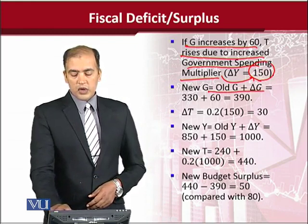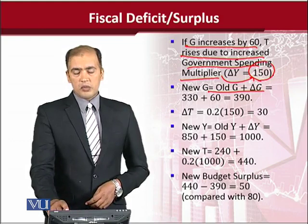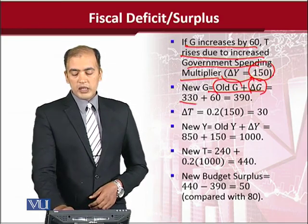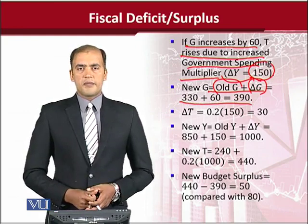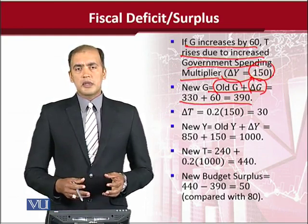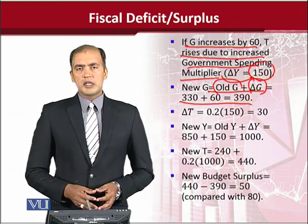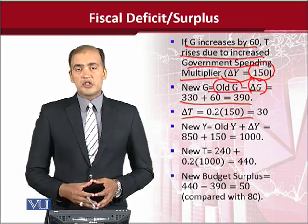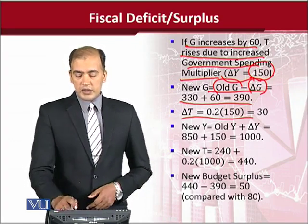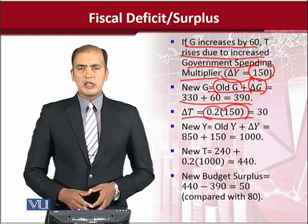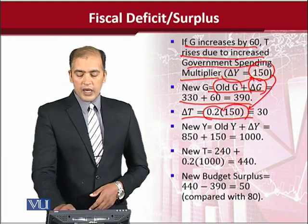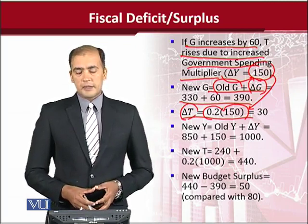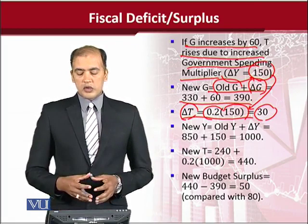Let us see the first change: the level of G, that is government spending, was changed. We have taken the old G and the increment in G and summed them up to get the new level of government expenditure. This is the post-analysis in which we are analyzing the situation after the increase in government expenditure. We can also calculate the induced part of tax, which has changed — it is equal to small t multiplied by the change in income, which was 150. This additional tax of 30, caused by the increased level of government spending, should be noted.